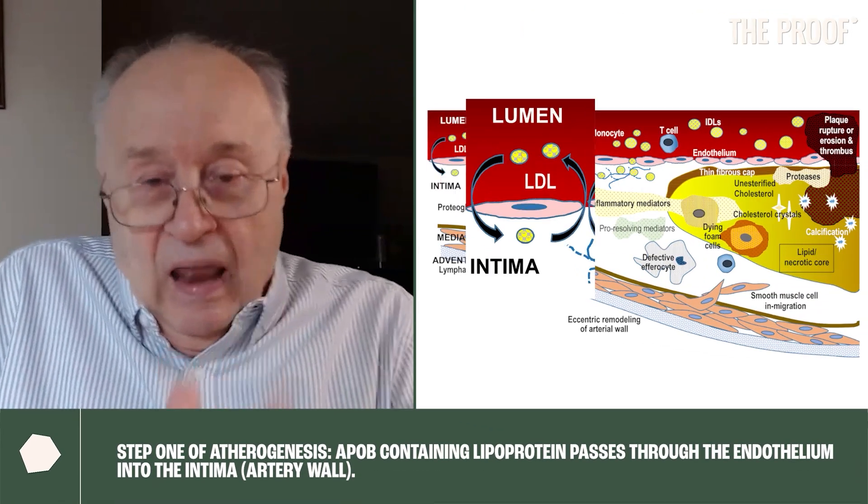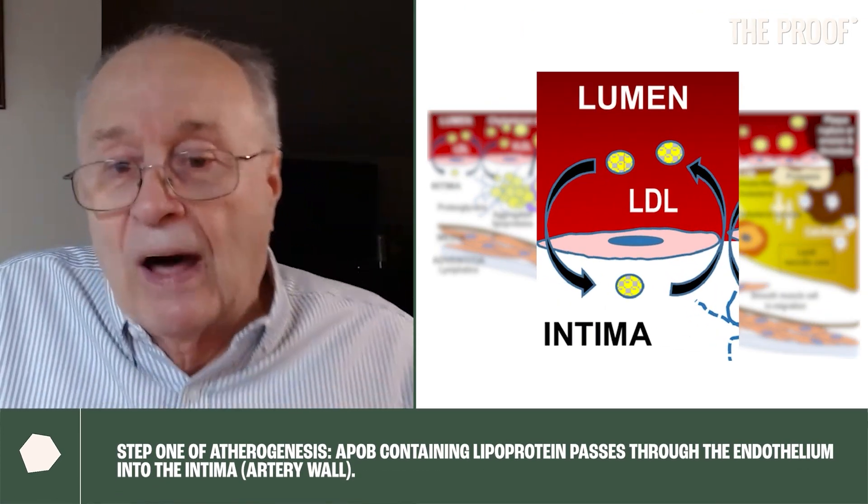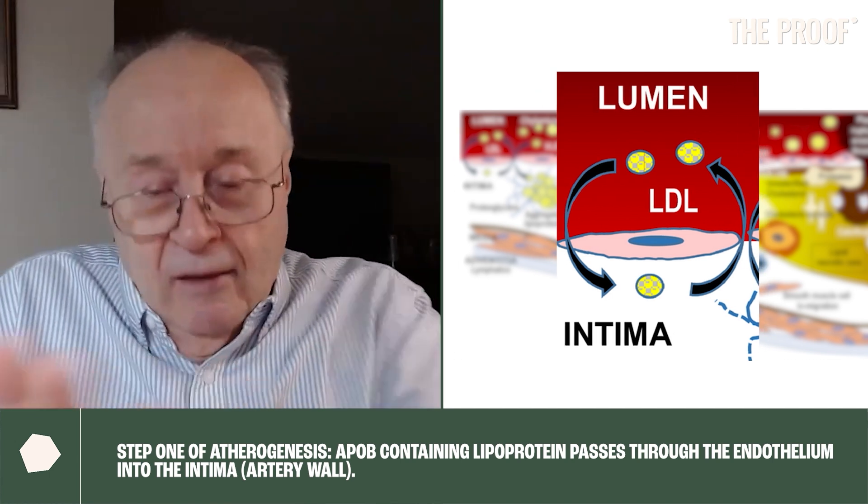But if the ApoB particle concentration — remember, one ApoB per particle — exceeds a certain level, there are more ApoB particles circulating than the liver is clearing. As that number goes up and up, the particles aren't being cleared by the liver. We have miles of endothelium on our arteries, so they just find the nearest artery and crash it. The ApoB particle carrying cholesterol passes through the endothelial lining — a one-cell lining of every artery — and now it's in the artery wall. That's step one of atherogenesis.